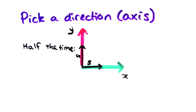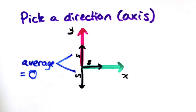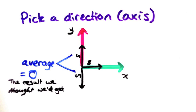The other half of the time, it will still have strength s, but this time in the negative direction of y. This is completely unexpected. But notice something. If we take the average of the results, we get 0, which was the result we thought we'd get.